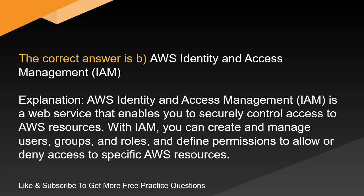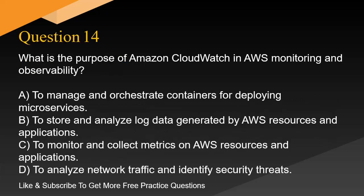Explanation. AWS Identity and Access Management, IAM, is a web service that enables you to securely control access to AWS resources. With IAM, you can create and manage users, groups, and roles, and define permissions to allow or deny access to specific AWS resources.